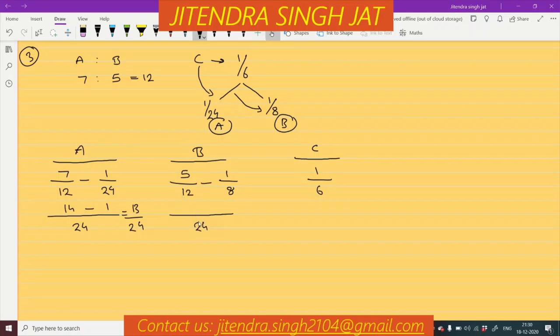Here 24. 12×2=24, 2×5=10. 8×3=24, 3×1=3. 10 minus 3 equals 7/24.